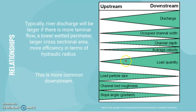The Bradshaw model shows expected river characteristics from upstream to downstream, though there are many exceptions as it doesn't account for human interference or other factors. The model shows that as you move downstream, discharge increases and the channel bed becomes less rough.